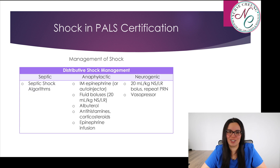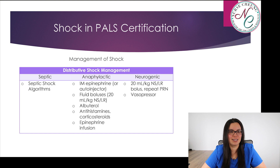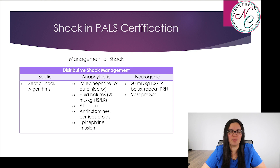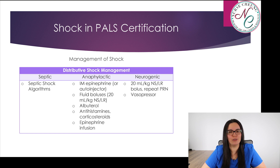Distributive shock: with sepsis, we want to use the septic shock algorithm. For anaphylaxis, we're going to give IM epinephrine or auto-injector, fluid boluses of 20 mLs per kilogram of normal saline or lactated ringers, albuterol, antihistamines or corticosteroids, or an epinephrine infusion.